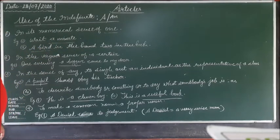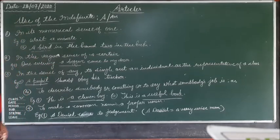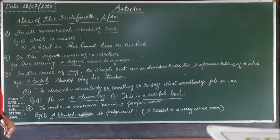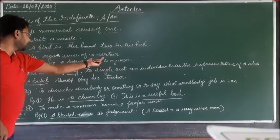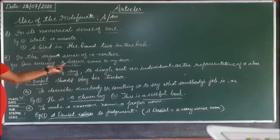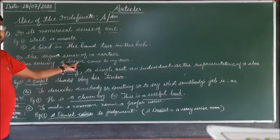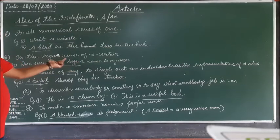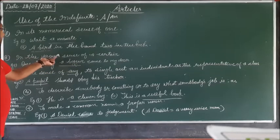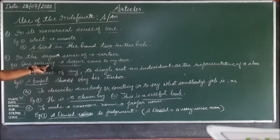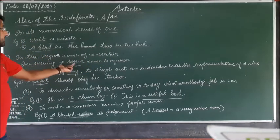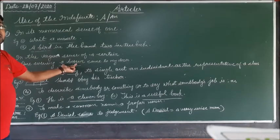The second use is in the vague sense of 'a certain'. For example: one evening a beggar came to my door. Here 'evening' is certain, but 'a beggar' is not certain — it is not clear who that beggar was. So 'a' is used in the vague sense of 'a certain'.